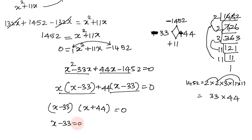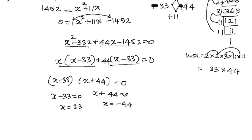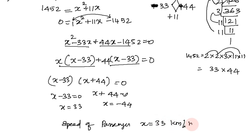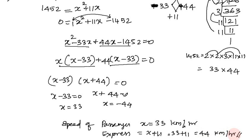Factoring gives (x minus 33)(x plus 44) equals 0, so x equals 33 or x equals minus 44. Since speed cannot be negative, x equals 33. Therefore the passenger train speed is 33 km per hour, and the express train speed is 33 plus 11 equals 44 km per hour. This is the answer.